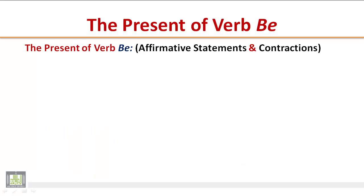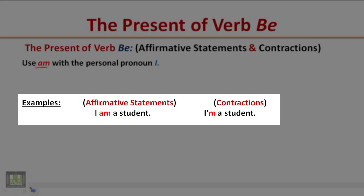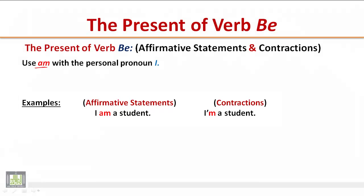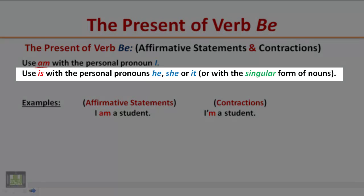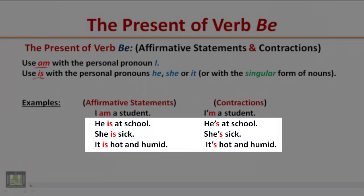The present of verb be: affirmative statements and contractions. Use 'am' with the personal pronoun 'I'. Example: I am a student. Contracted form: I'm a student. Use 'is' with the personal pronouns he, she, or it, or with a singular noun. Examples: He is at school / He's at school. She is sick / She's sick. It is hot and humid / It's hot and humid.